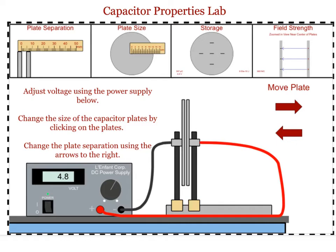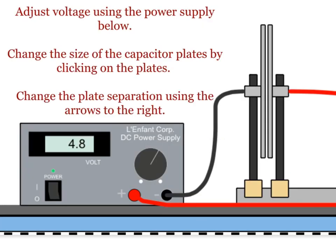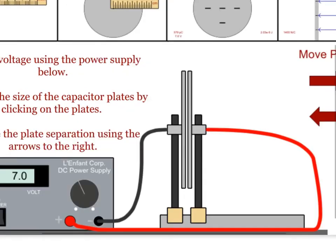The first thing students may want to do is change the voltage. If they want to raise or lower the voltage, they will click on the knob. If they click on the right side of the knob, the voltage will go down. If they click on the left side of the knob, the voltage will go up.